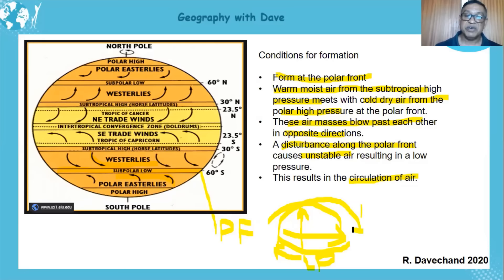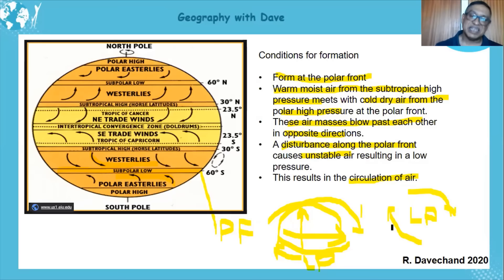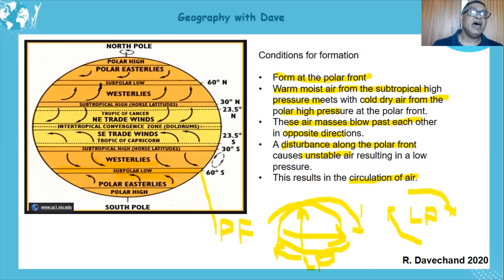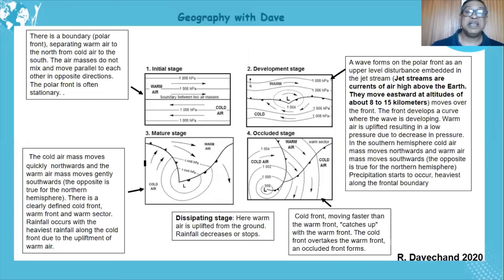The warm air is pushed further south and the cold air moves northward, starting the circulation. The mid-latitude cyclone begins to form in this area. This occurs in the westerly belt. Now let's look at the stages.